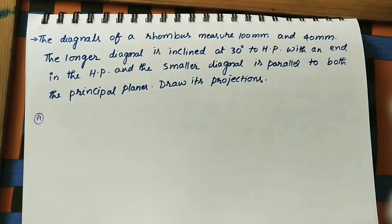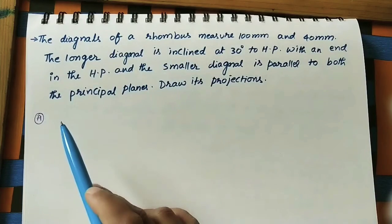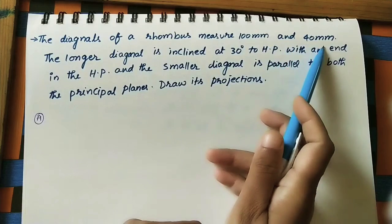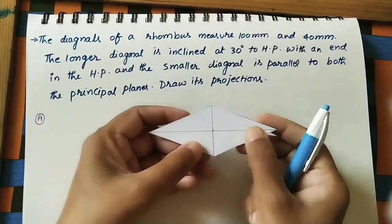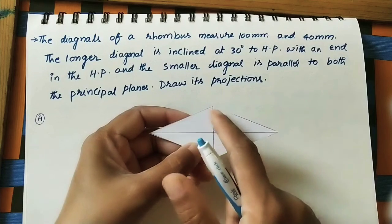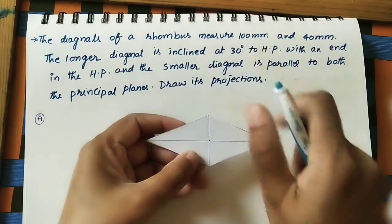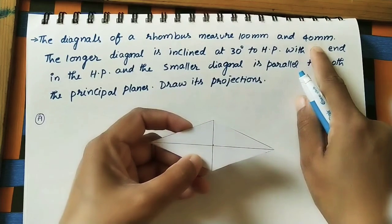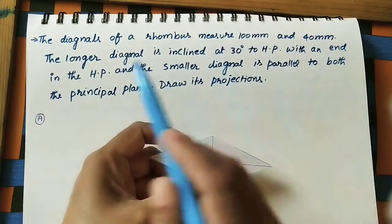Welcome to this channel. Let us discuss how to do the projections of a given rhombus. The given data: the diagonals of the rhombus measure 100 mm and 40 mm. The rhombus has two diagonals — the longer diagonal is 100 mm (10 centimeters) and the shorter diagonal is 40 mm.